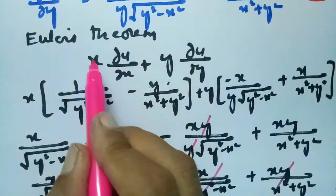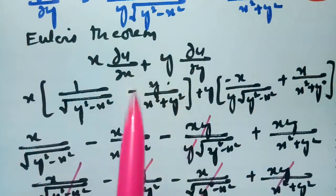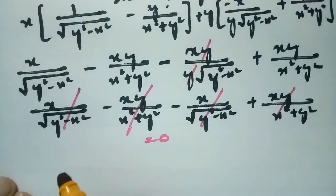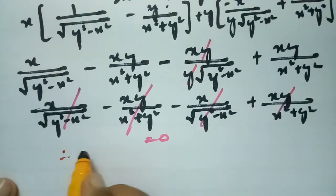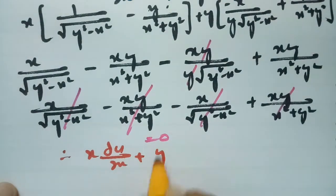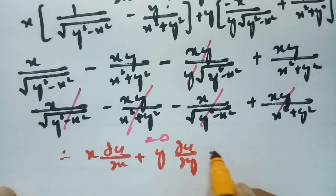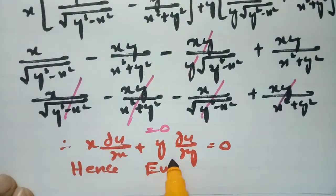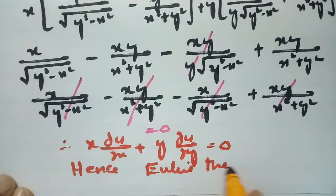Therefore x into ∂u/∂x plus y into ∂u/∂y equals 0. Hence Euler's theorem is verified.